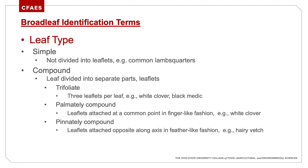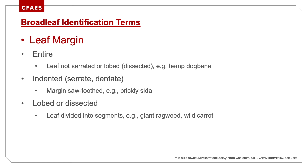Broadleaf identification terms: simple means not divided into leaflets; compound means the leaf is divided into separate parts — trifoliate, palmately compound, or pinnately compound. I'll breeze through these since you can read them yourself and pause as needed. I made this PowerPoint so that essentially everything I say is listed on the slides. Leaf margin — the edge of the leaf: entire means not serrated or lobed; serrated has a sawtooth margin; lobed or dissected means the leaf is divided into segments, like giant ragweed or wild carrot.